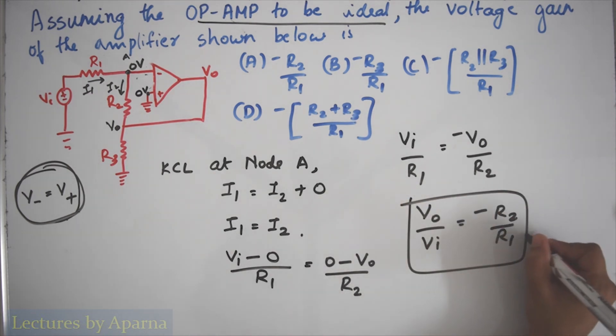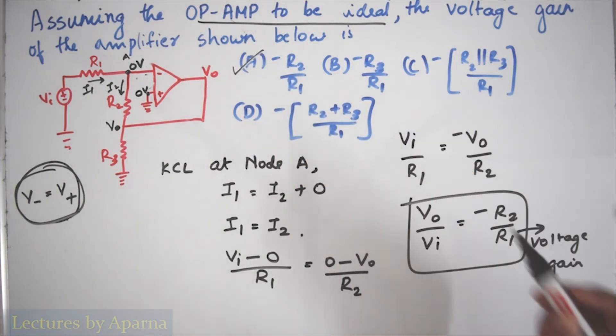This is the voltage gain of this amplifier. Therefore, the answer is option A: minus R2/R1.